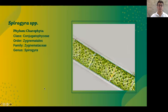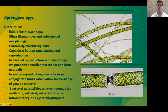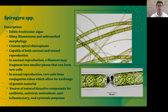Here we have the Spirogyra species. They belong to the phylum Charophyta, class Conjugatophyceae, order Zygnematales, family Zygnemataceae, and genus Spirogyra. Spirogyra species are edible freshwater algae with slimy, filamentous, and unbranched morphology. They contain spiral chloroplasts and reproduce sexually or asexually. In asexual reproduction, a filament may fragment into smaller pieces that form new cells. In sexual reproduction, two cells form conjugation tubes that allow the exchange of genetic material. Spirogyra species are a source of natural bioactive compounds for antibiotic, antiviral, antioxidant, anti-inflammatory, and cytotoxic purposes.